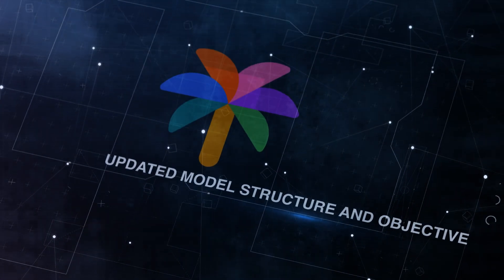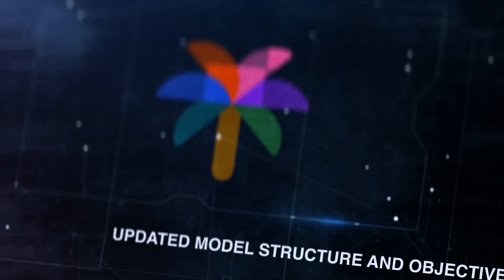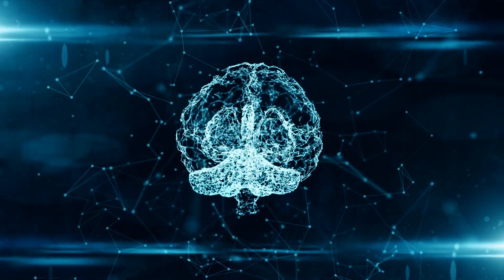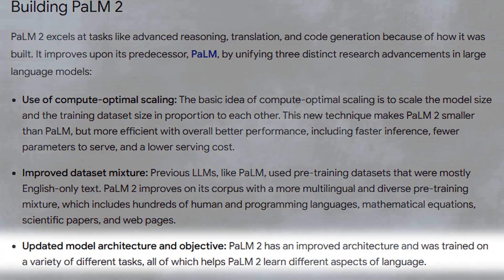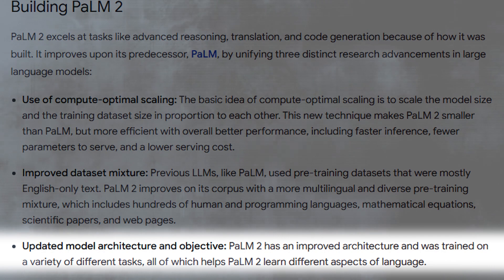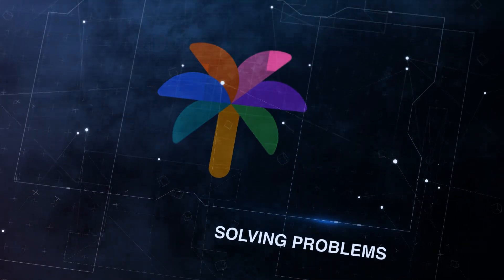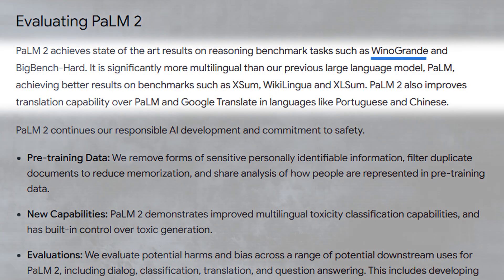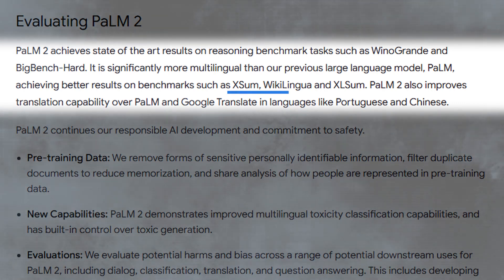Third, POM2 has an updated model structure and objective. POM2 introduces improved architectural designs and underwent training across various tasks. This broader training scope empowers POM2 to grasp various aspects of language more effectively. So needless to say, POM2 is a star in solving problems. It beats Winogrande and Big Bench Hard, doing even better than its older sibling POM in languages and challenges such as XSUM, Wikilingua, and XLSUM.